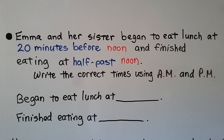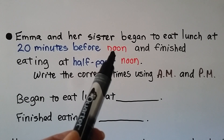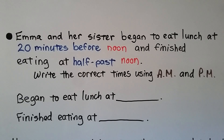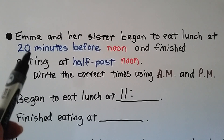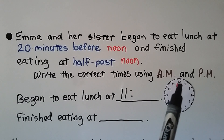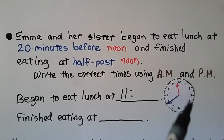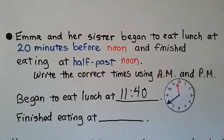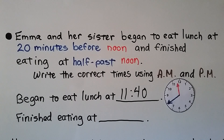Write the correct times using A.M. and P.M. They began to eat lunch at twenty minutes before noon. Noon is 12 o'clock, so twenty minutes before that means it wasn't twelve yet — it must have still been eleven. Counting back from twelve counterclockwise: 5, 10, 15, 20 minutes — the minute hand is pointing to the eight, which is 5, 10, 15, 20, 25, 30, 35, 40. That's 11:40. It's before noon, so it's still morning — if you said A.M., you're right. It's 11:40 A.M.